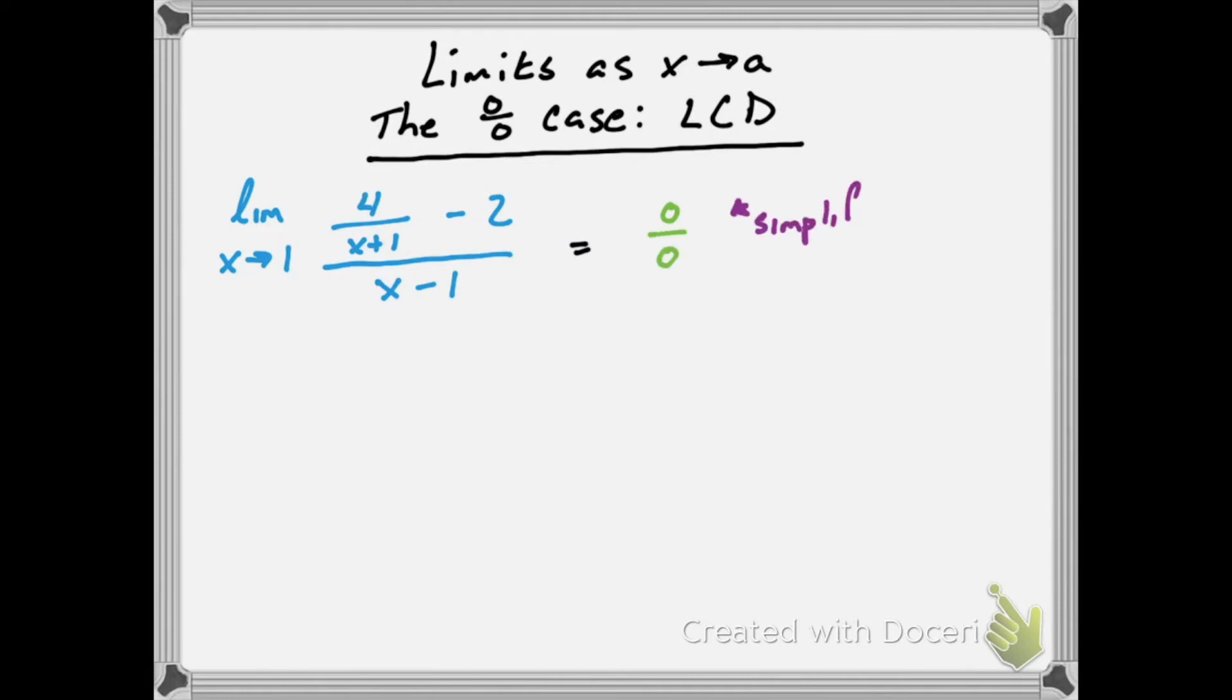In this case, since we're dealing with somewhat of a compound fraction, the trick is going to be to multiply the numerator and denominator by that common denominator of x plus 1.